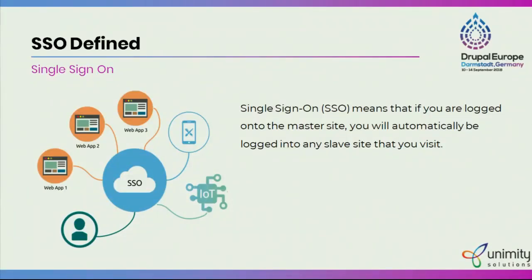A large enterprise organization will have multiple applications — some of their own, some from others, or some from their business partners. In this diagram, we can see the SSO has a single authorization and authentication system implemented at the center. A user can log into that same system and get access to all of the applications, which might be in different languages, different technologies, and some might be in Drupal.